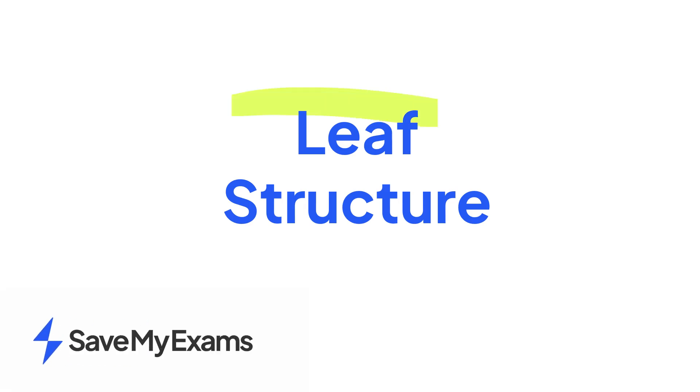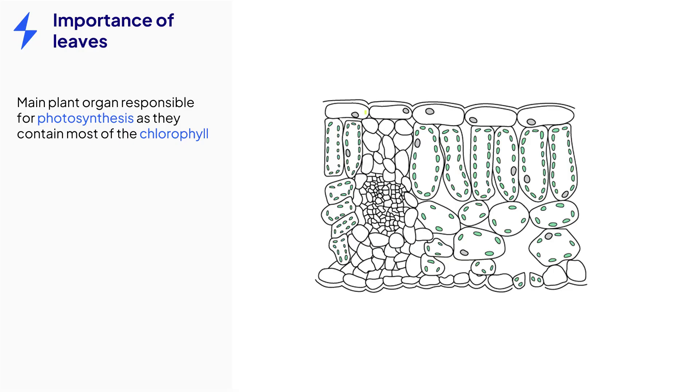This video is on the topic of leaf structure and its adaptations for photosynthesis. Leaves are the main plant organ responsible for photosynthesis since they contain most of the chlorophyll needed for the process to occur. The specific structure of leaves facilitates the process of photosynthesis in a plant.